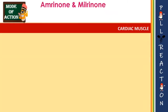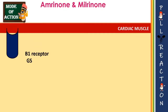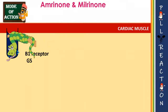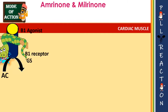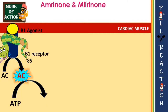Moving on to the mechanism of action of amrinone and milrinone. Within the cardiac muscles, we have beta-1 adrenergic transmembrane receptors, which are serpentine or heptahelical domain G protein-coupled receptors of the G-stimulatory type. When a beta-1 agonist binds to the beta receptor, it stimulates adenylyl cyclase.